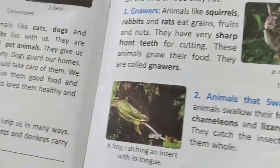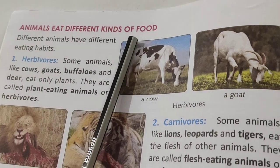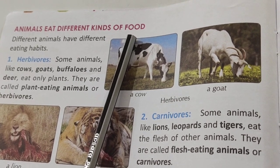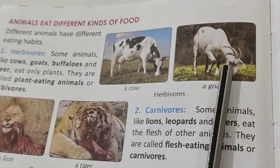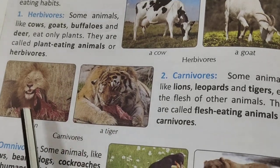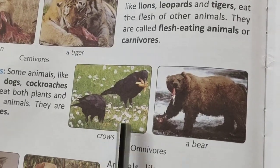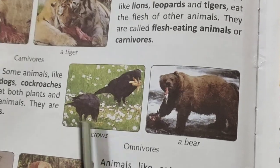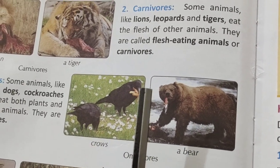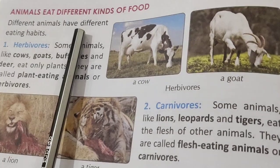Let's move to page number six. Animals eat different kinds of food — different different kind of food खाते हैं, एक जैसा नहीं। For example, cow and goat eat grass. Lion and tiger kill other animals and eat their flesh. Some animals like crow and bear eat both flesh and plant food. So animals have different eating habits.